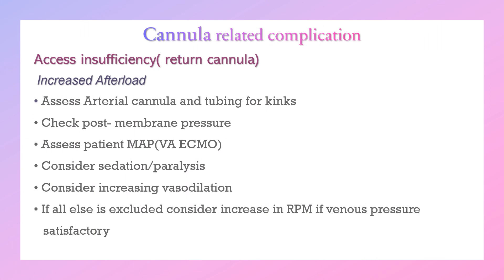Another cause of low circuit flow is insufficiency related to the return or arterial cannula, causing increased afterload or a problem pushing blood to the patient. For any cannula problem, check the tube, the cannula itself, its size and site, and any kinking. Post-membrane pressure should be the primary tool for assessing arterial blood pressure, especially in VA ECMO. Consider sedation and paralysis if the patient is moving or coughing. If the patient is normovolemic with satisfactory CVP, consider increasing speed if tolerated.